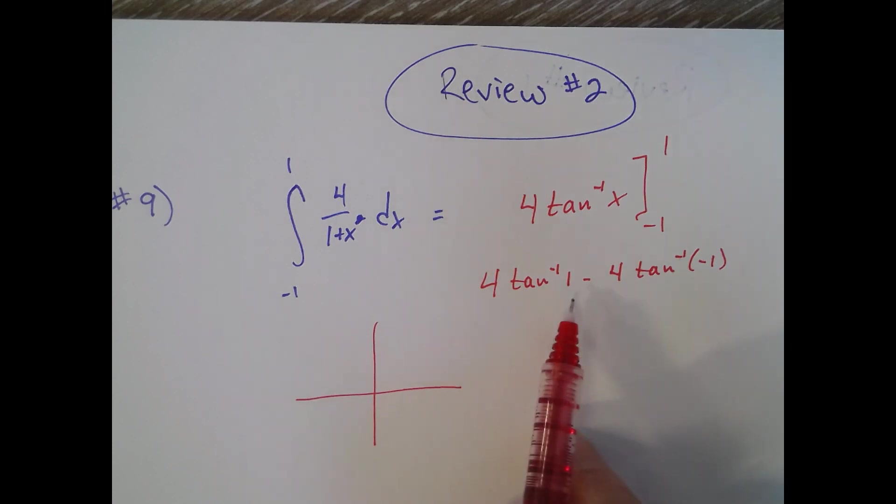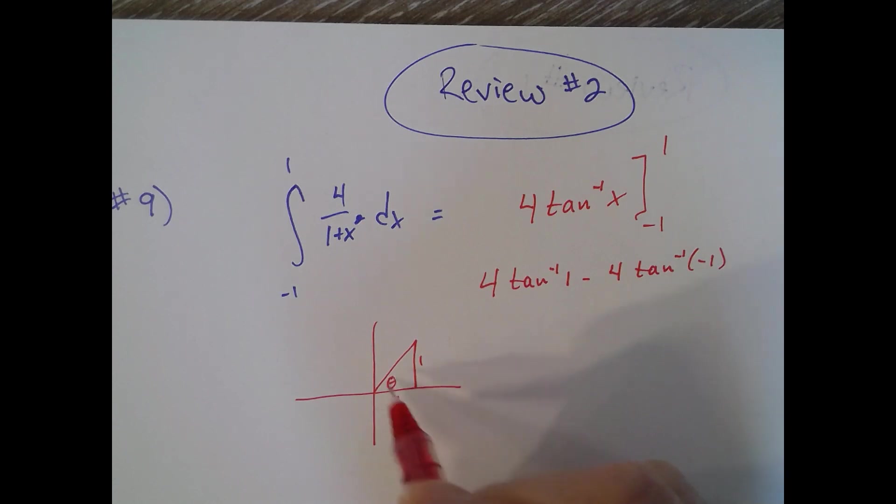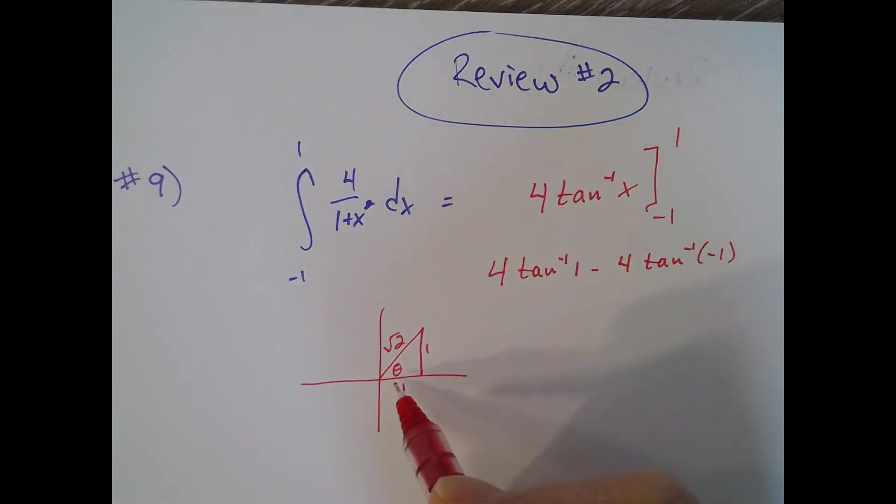Well, this angle right there has a tangent of one: one, one, square root of two. So we can recognize that that angle is a 45 degree angle or pi over four. So it's four times pi over four.